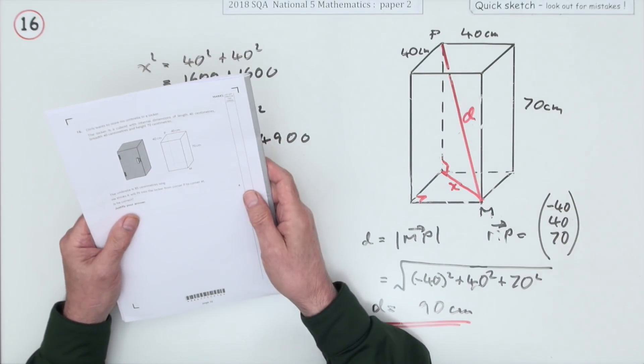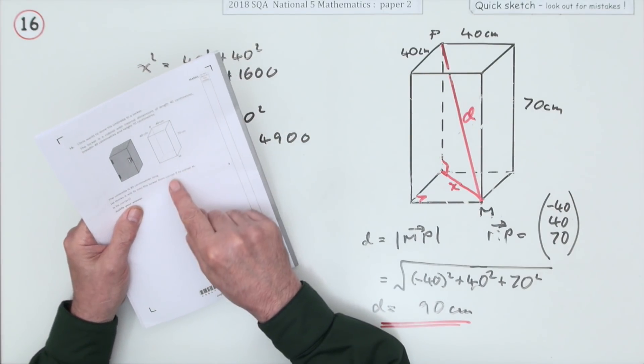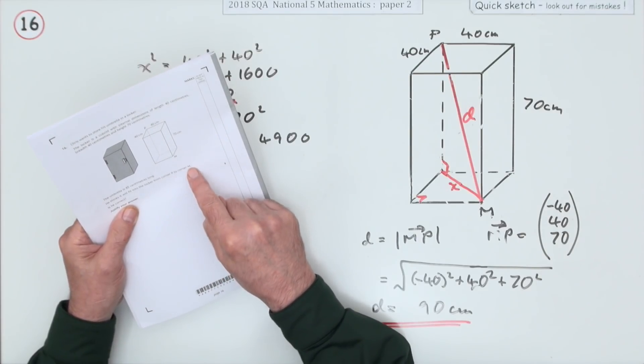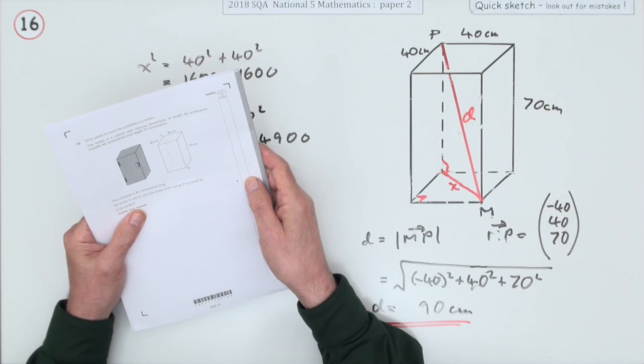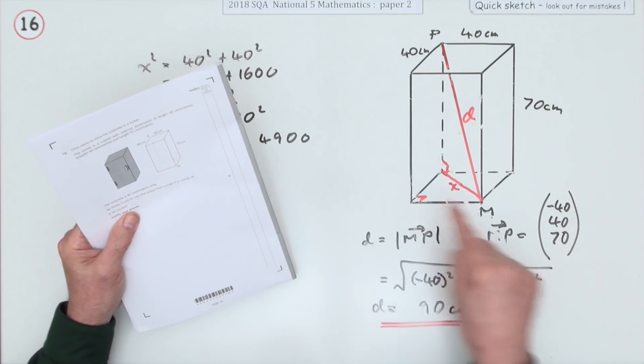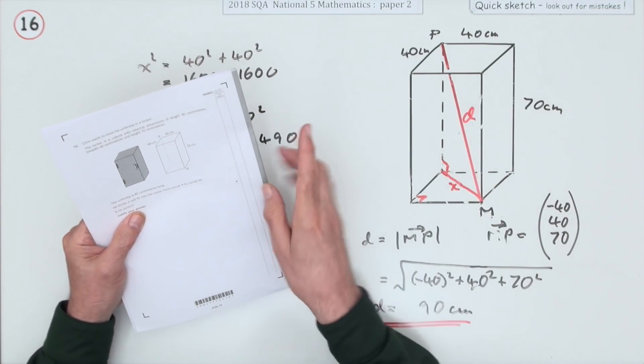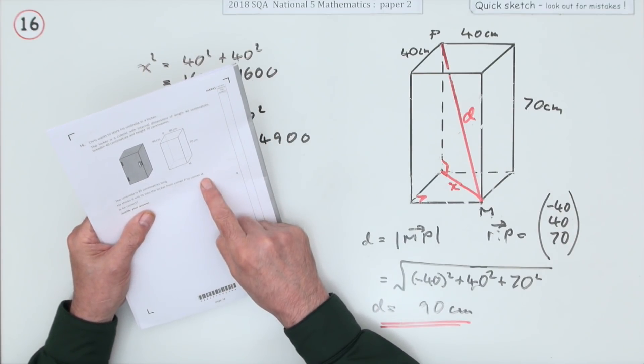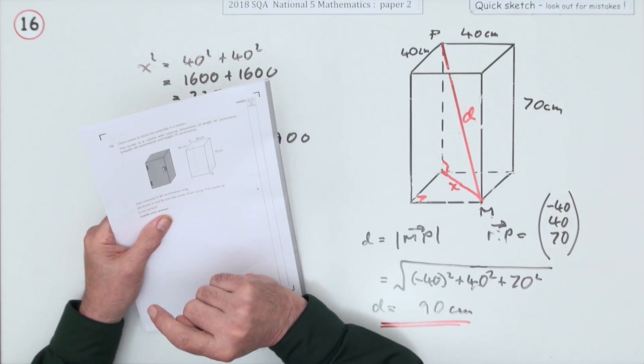Then afterwards, it began to bug me about this 'corner P to corner M,' because that specifically means corner to corner. That's a unique distance. The wording is very ambiguous. If it said 'corner M towards corner P,' then yes, that would make sense.